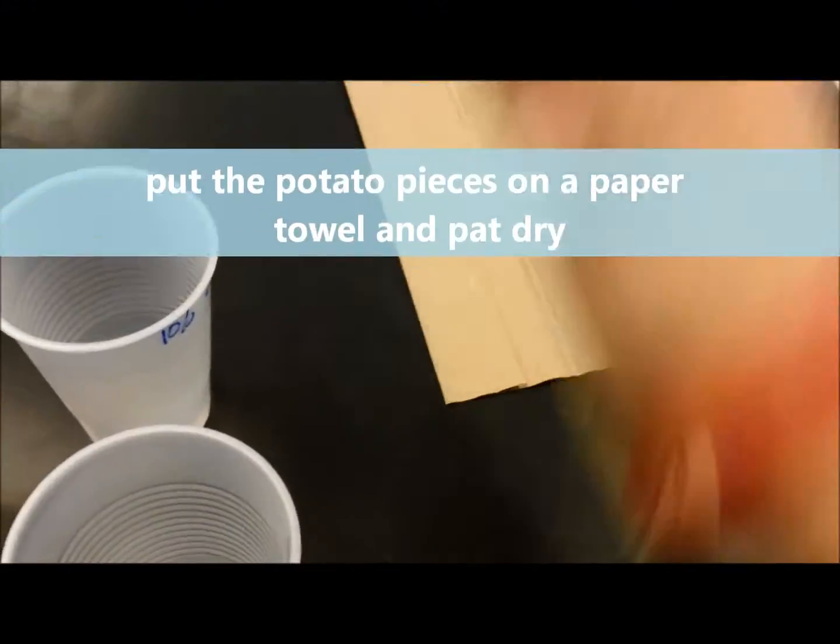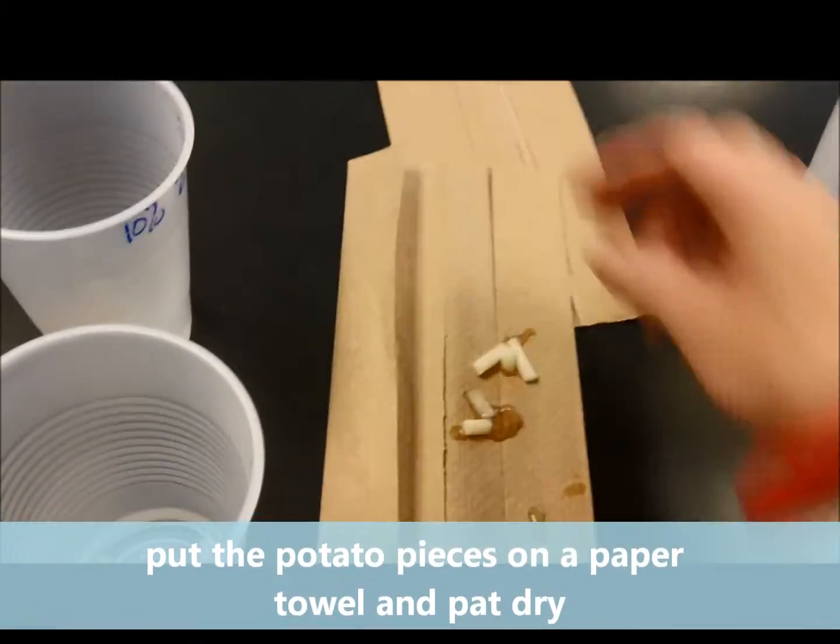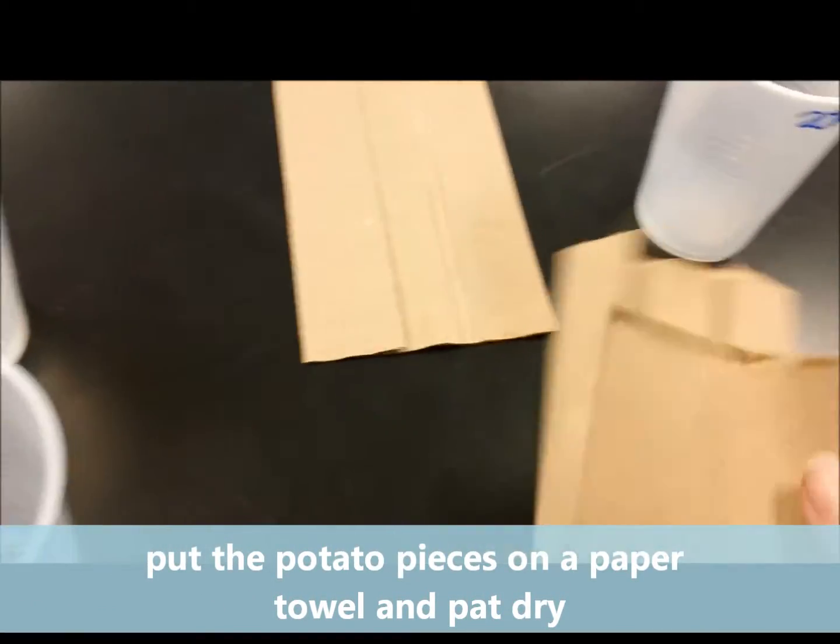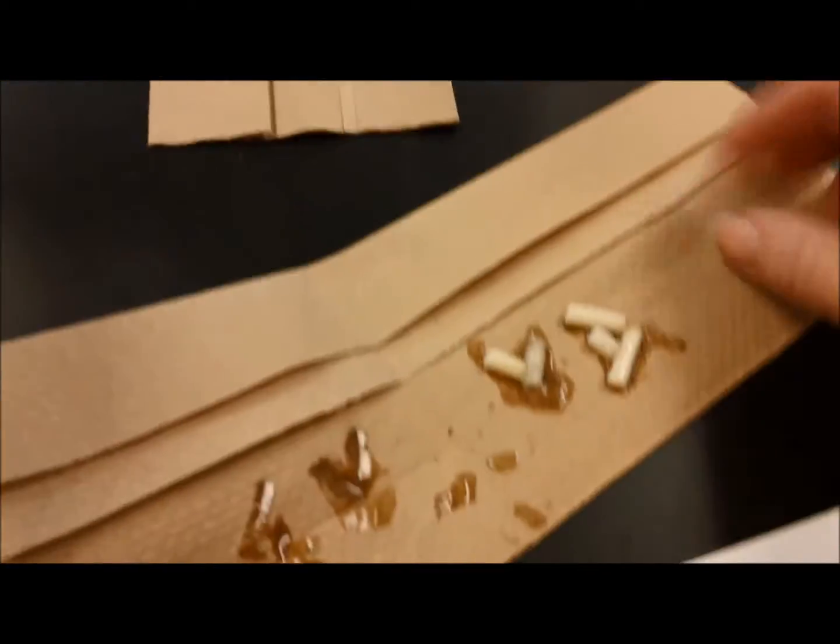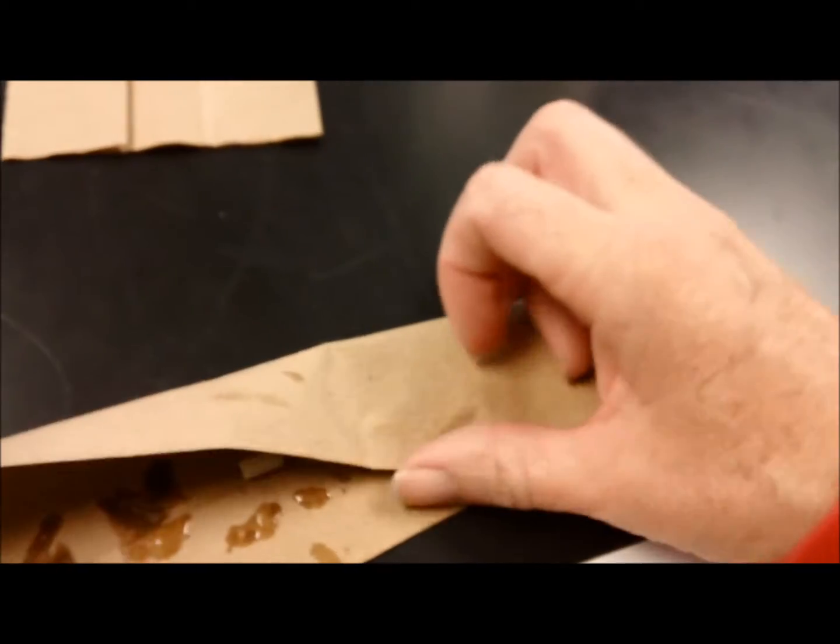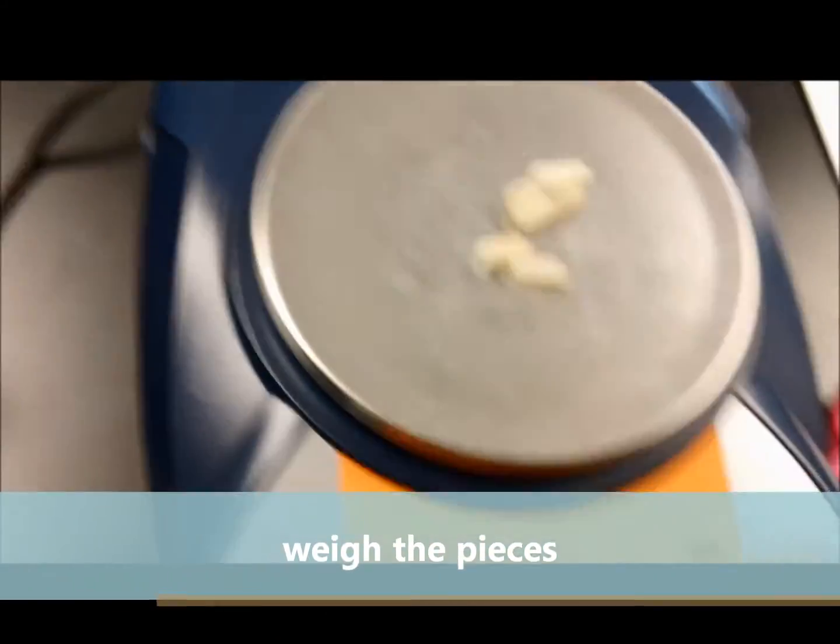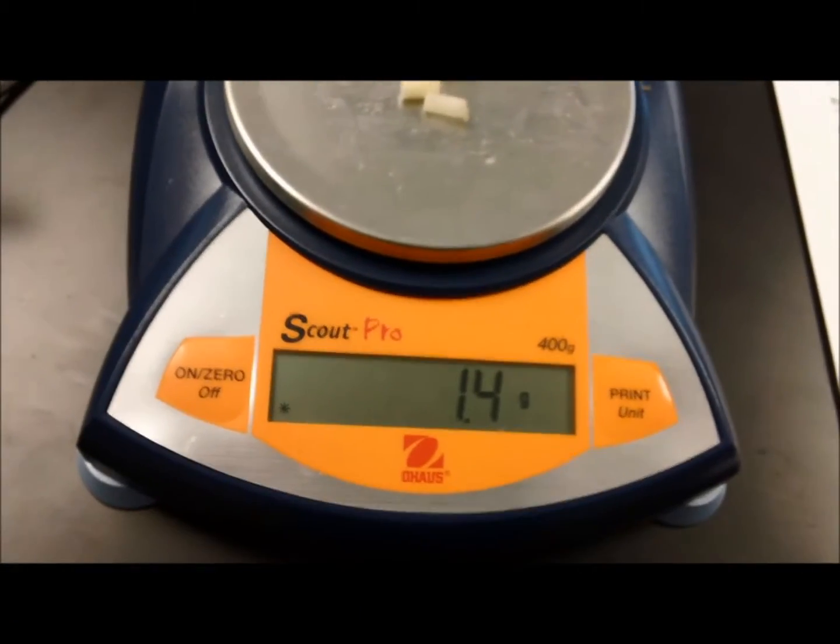Then we'll put our potato pieces on a paper towel. We only want to weigh the potato pieces, not any of the water, so we'll pat them dry to get rid of the excess water. Then we will weigh them. This was our 20%, and we see that it has stayed the same.